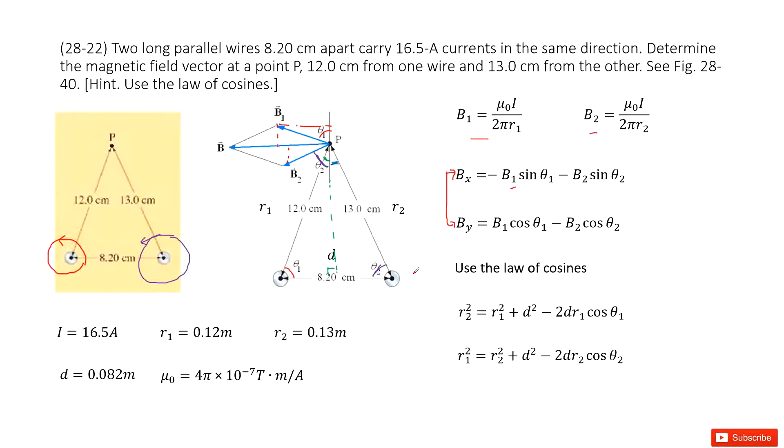And in this triangle, we can see we have three side lengths: R1, R2, and D, right? So first of all, we can solve using the law of cosines. Write the equation for this one. And then for theta 2, we write the equation for this one.